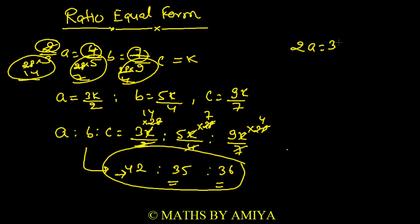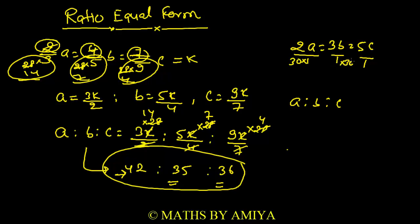For example, if 2A = 3B = 5C, what would be the integral ratio form? Here each numerator is upon 1, so we take the LCM of numerators 2, 3, 5 which is 30, and multiply 30 in the denominator of each variable. This gives 15, 10, and 6. So the integral ratio of A : B : C is 15 : 10 : 6. For better understanding, let us practice with one more example.